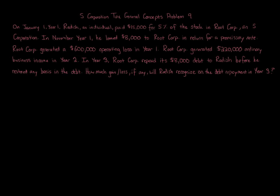S corporation tax general concepts, problem nine. On January 1st, Year 1, Radish, an individual, paid $15,000 for 5% of the stock in Root Corp, an S corporation. In November Year 1, he loaned $8,000 to Root Corp in return for a promissory note. Root Corp generated a $600,000 operating loss in Year 1, and $220,000 ordinary business income in Year 2. In Year 3, Root Corp repaid its $8,000 debt to Radish before he restored any basis in the debt. How much gain or loss, if any, will Radish recognize on the debt repayment in Year 3?